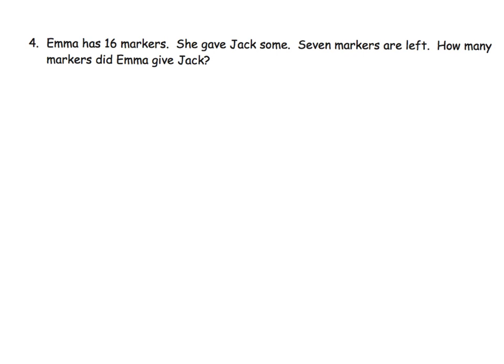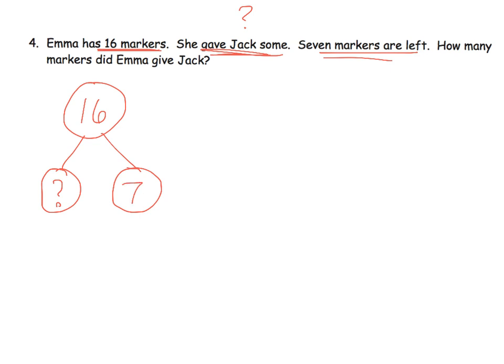We're going to practice that same strategy with a word problem, which is actually kind of simple because it's a small number. Let's read it: Emma has 16 markers. She gave Jack some. We don't know how many, so I'm going to underline that and put a question mark. And then it says seven markers are left. So if we wanted to see what that would look like as a number bond, it might look like this. Or if we wanted to see what it would look like as a tape diagram, it might look like this.